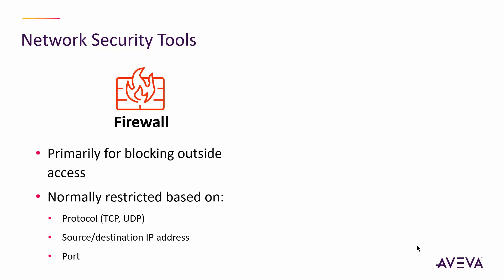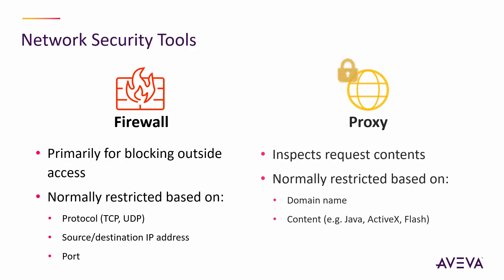A firewall is typically used to block outside access to your network at the corporate level and on the control network. It's mostly about that inbound access, but you can also block outbound access. It's typically restricted based on protocol and ports, can be restricted by IP address, but typically is not. That's not real reliable on the internet, for example. It's better to use name-based restrictions, and for that, that's where a proxy comes in.